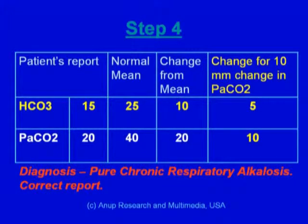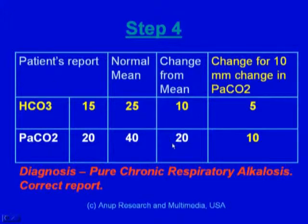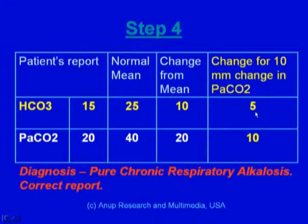Now let's look at what's going on with the bicarb. The bicarb is 15 in this patient and the normal mean is 25, so the bicarb has decreased by 10. For a 20 millimeter decrease in PaCO2, the bicarb has decreased by 10 — so for a 10 millimeter decrease in PaCO2, the bicarb has decreased by 5. This meets the criteria for pure chronic respiratory alkalosis and confirms that the blood gas report is correct.